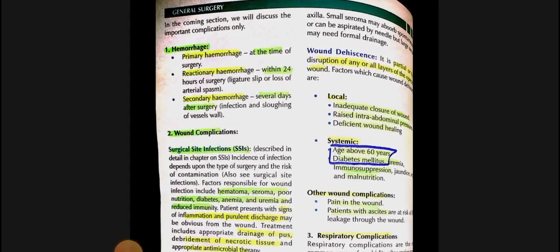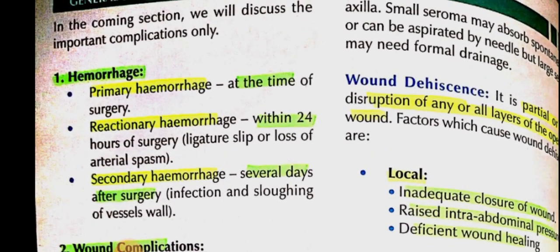Now we look at important complications in detail. Hemorrhage: three types occur — primary (during surgery), reactionary (within 24 hours, due to ligature slip or loss of arterial spasm), and secondary (several days after surgery, due to infection or sloughing of the vessel wall), as studied in the hemorrhage chapter.